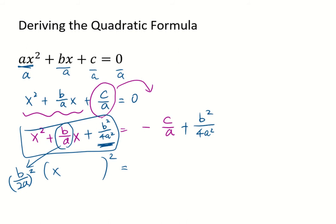Okay, so if I add b squared over 4a squared, the left side will be a perfect square trinomial, which is x plus b over a divided by 2, which is b over 2a. That's like b over a times 1 half.